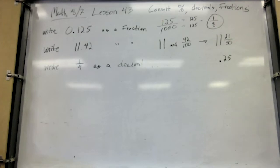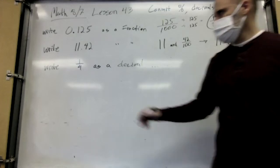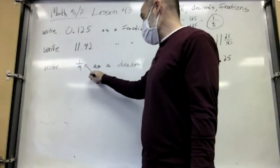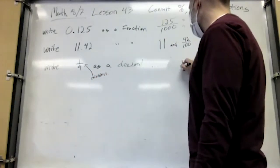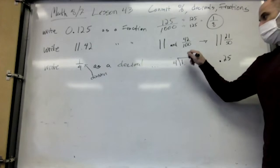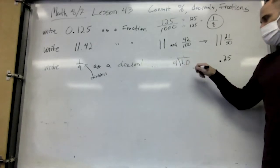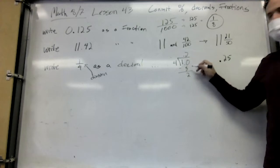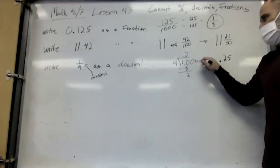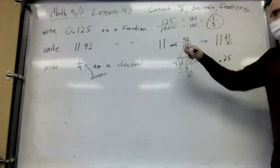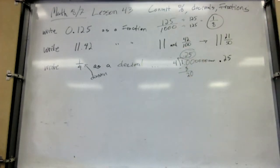Remember, the fraction bar means divide. So one divided by four — does four go into one? Nope. So you add a decimal and a zero. Four goes into 10 two times — two times four is eight, subtract, remainder two. Bring down another zero. Four goes into 20 five times. We got 0.25. One-fourth is the same as one quarter, and a quarter is 25 cents.